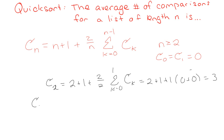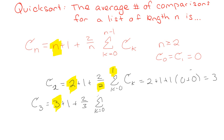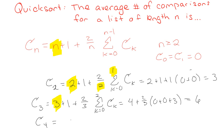Then we have c₃: that's 3 + 1 + (2/3) times the sum of all the previous c(k)'s, so 4 + (2/3)(0 + 0 + 3) = 4 + 2 = 6. And if you compute c₄, that comes out to 19/2.